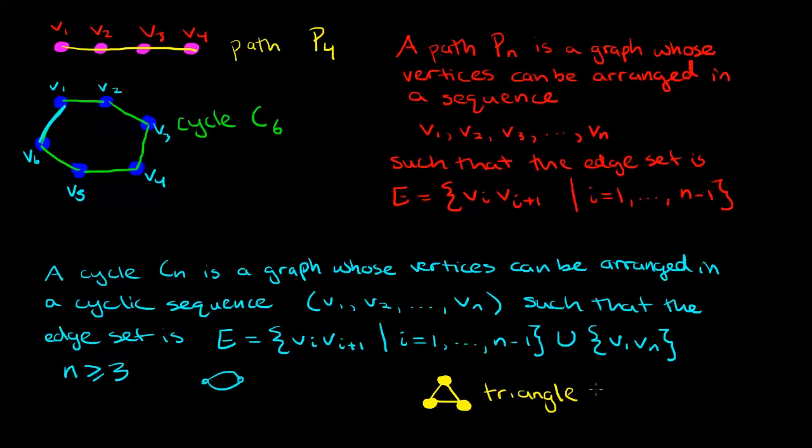Also in graph theory you'll often hear people referring to the graph which is the triangle. Notice that what we've learned already is that the triangle is equal to the cycle which has three vertices and it's also the complete graph on three vertices because it's such a small case. So these are some of the most important classes of graphs in graph theory.